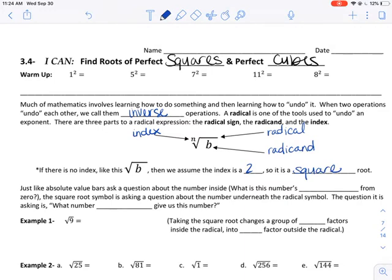Just like absolute value bars ask a question about the number inside, it says what's this number's distance from zero?